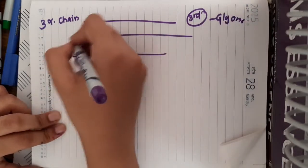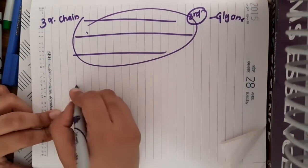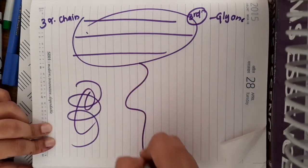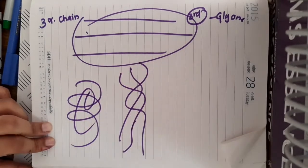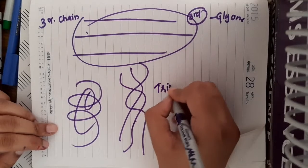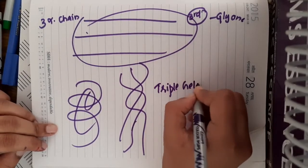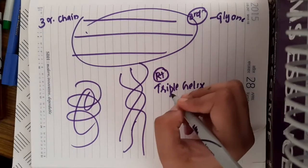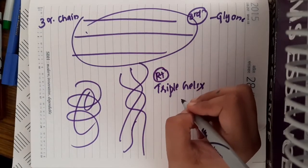These 3 alpha chains are actually arranged in triple helix manner. It is arranged in a triple helix structure, that too, right-handed triple helix structure.